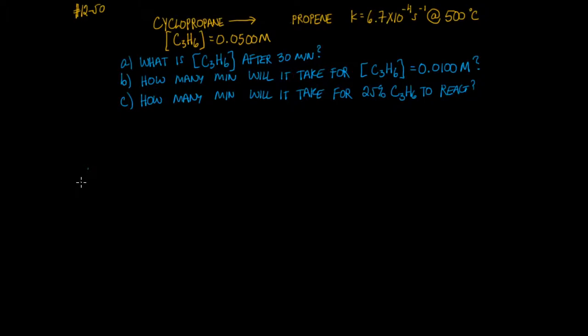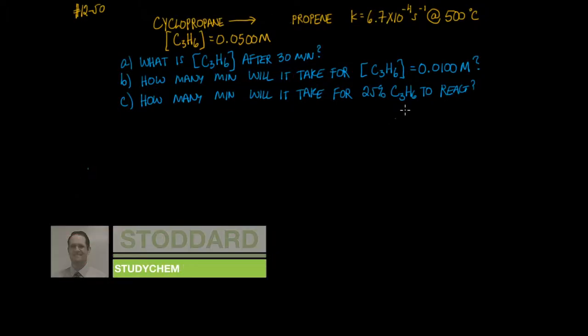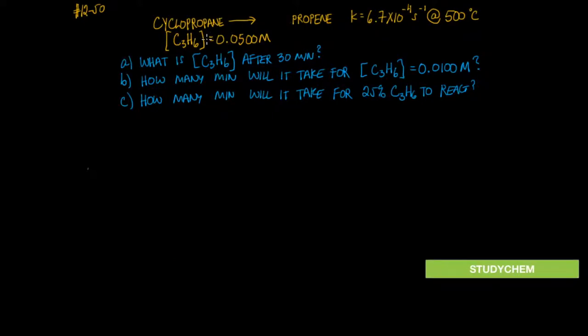In this problem we are told that at 500 degrees Celsius, cyclopropane or C3H6 rearranges to form propene. The reaction is first order and the rate constant is given to us. It has a value of 6.7 times 10 to the minus fourth per second, and it asks us if the initial concentration is 0.0500 molar, answer these questions.